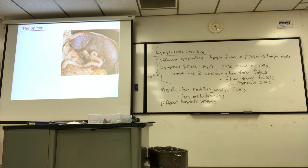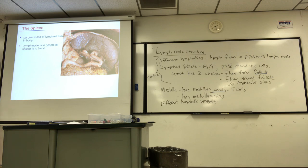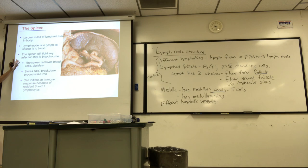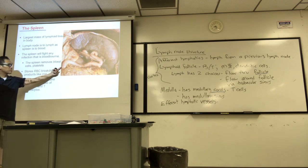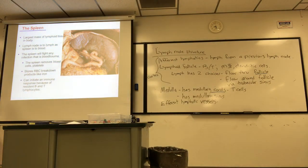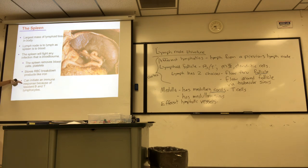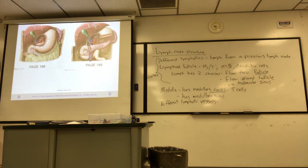Another structure that has lymphatic function is the spleen — it's a filter for the blood, not for the lymph. The spleen is the largest mass of lymph tissue in the body. As the lymph node filters lymph, the spleen filters blood. The spleen will find any blood-borne infection. It's also kind of a blood cell graveyard — it removes aged and dying cells. But it can also initiate an immune response, which is the function I'm going to focus on.